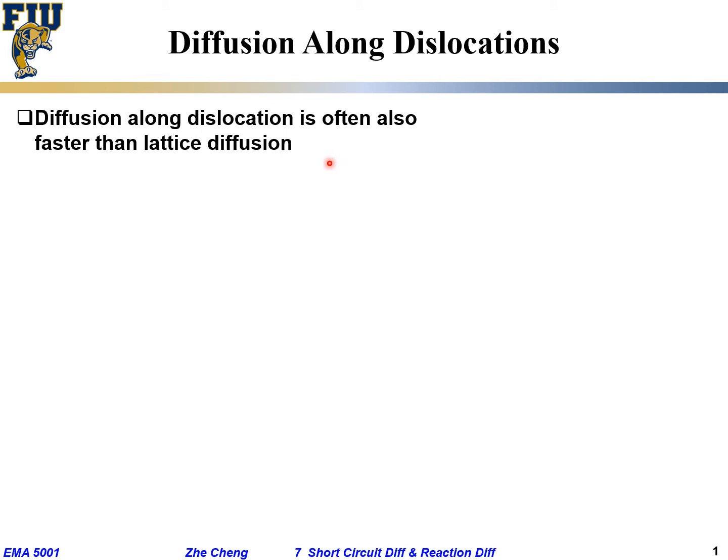It's not surprising that the diffusion along dislocation, that 1D defect, would be faster than lattice diffusion. Why? Because along that line, atoms are packed looser, not as dense.